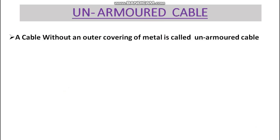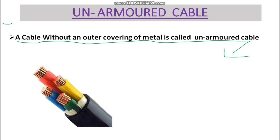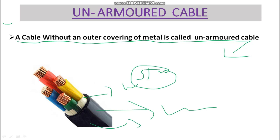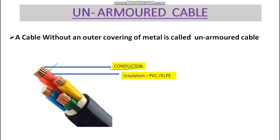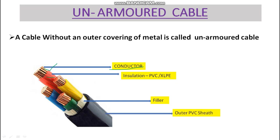Now let's look at unarmored cables. A cable without an outer covering of metal is called an unarmored cable. As you can see here, there is no steel wire over it, so it costs less than armored cable. Its parts are: conductor (copper or aluminium), insulation (PVC or XLPE), filler, and outer PVC sheath. It is used for low-voltage sub-main and distribution purposes internally.